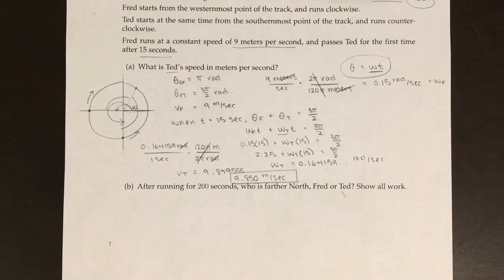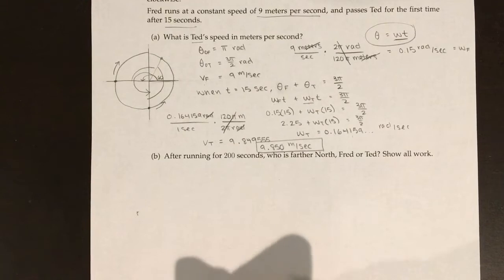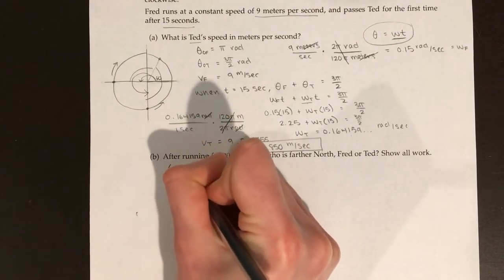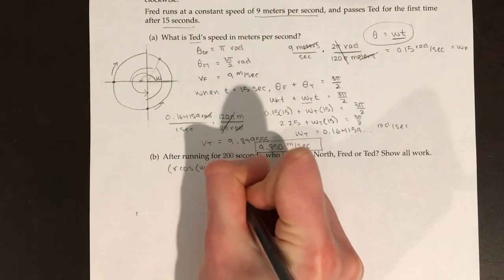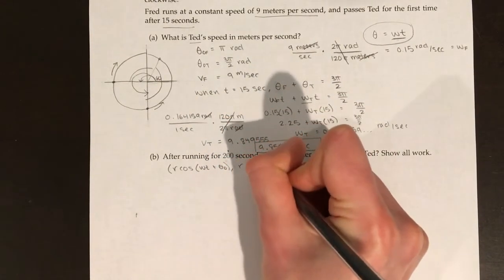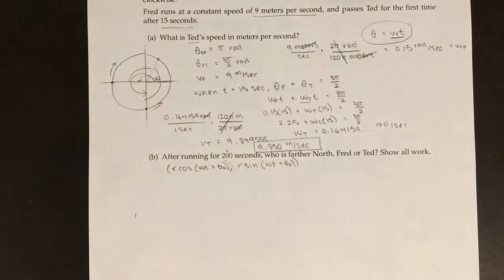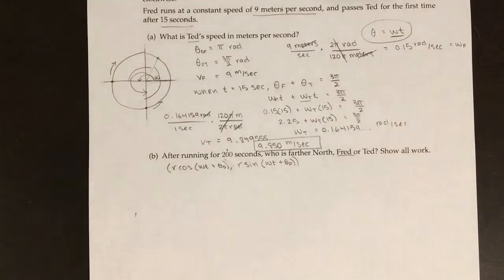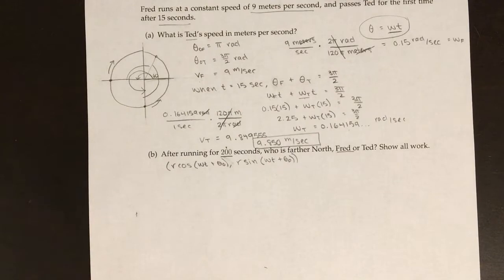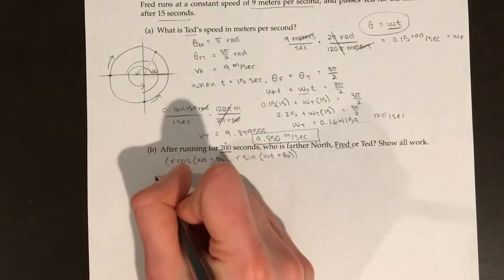Now for part b: after running for 200 seconds, who is farther north — Fred or Ted? In this situation, since we're looking for their specific locations at a specific point in time, we need to use the coordinate formulas. The x-coordinate is r × cos(ωt + θ₀) and the y-coordinate is r × sin(ωt + θ₀). I'll first find Fred's coordinates after 200 seconds. Since everything is already in seconds, I can plug 200 directly in.